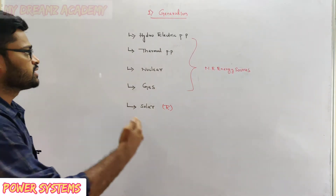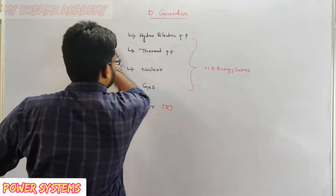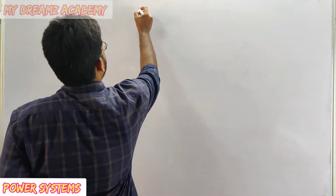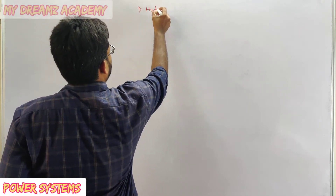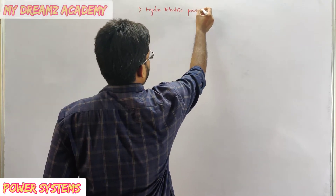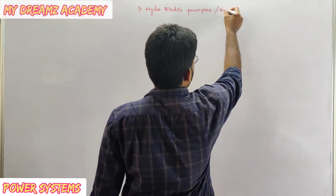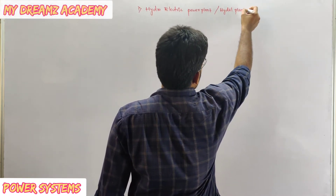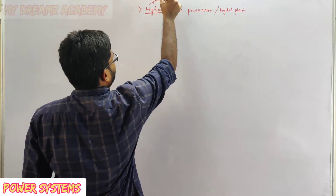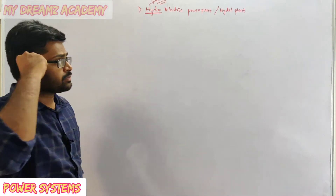First we will see the hydroelectric power station, then thermal, then nuclear, then gas power plant, then solar. The first one is the hydroelectric power plant — another name is hydel plant. The name itself tells us: hydro means water. So by using water, we are generating electrical output power.